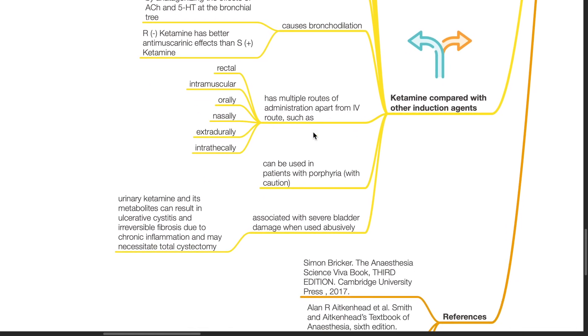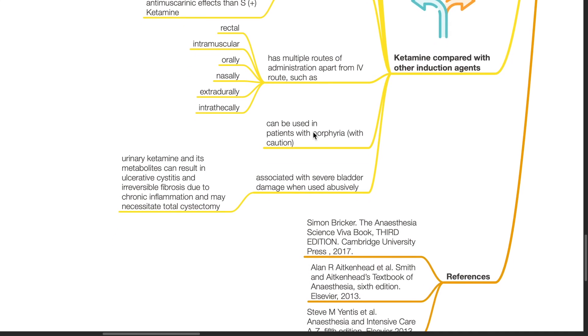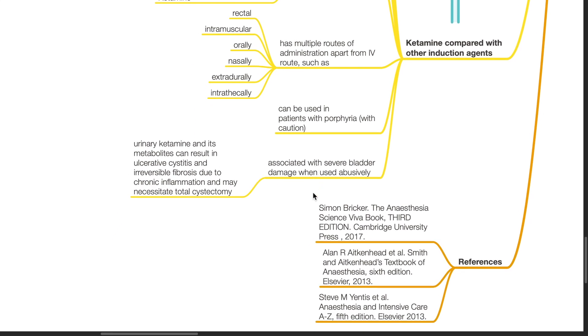Ketamine can be used in patients with porphyria, however with caution. Ketamine is associated with severe bladder damage when used abusively. Urinary ketamine and its metabolites can result in ulcerative cystitis and irreversible fibrosis due to chronic inflammation and may necessitate total cystectomy.